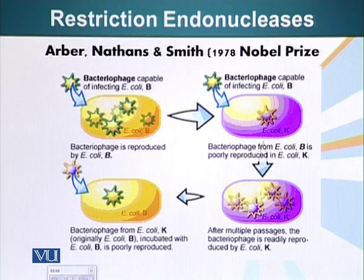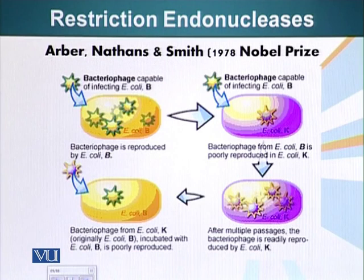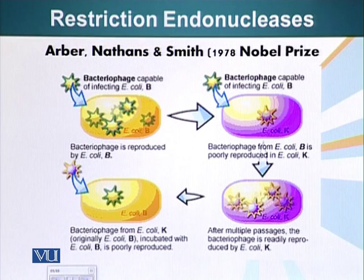Scientists noted that a bacteriophage — a virus that can infect a bacterial cell — when infecting E. coli B strain, and then used to infect a different strain of E. coli, the K strain, it was very ineffective at infecting that E. coli K strain.